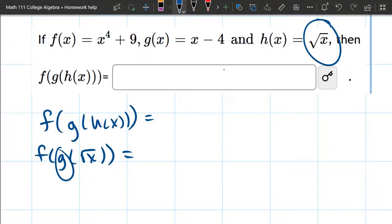Next up's the g function. What is g? g takes the input and subtracts 4. Because I'm about to do function composition, I'm going to feed g a box, and it's going to go box minus 4. And we're going to put that square root x in place of the box right here.